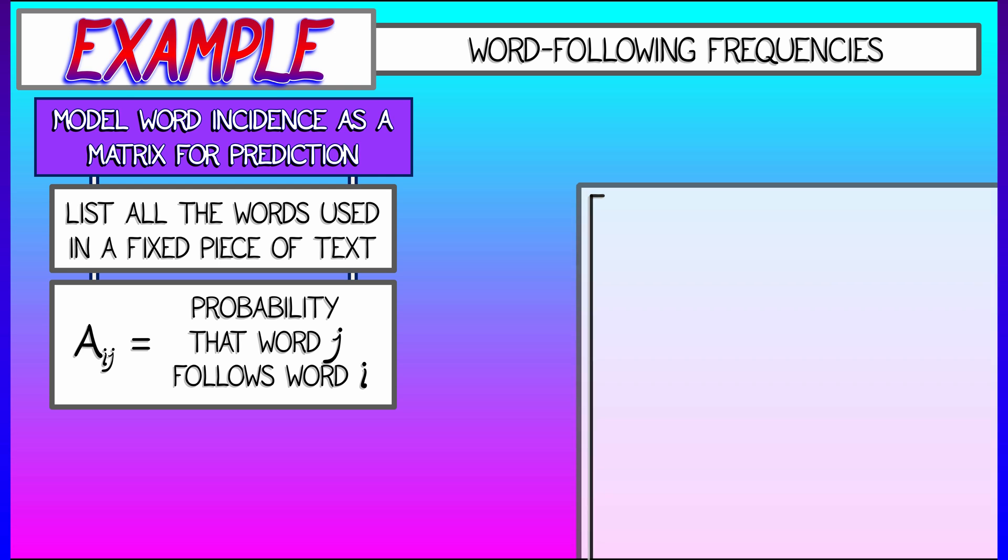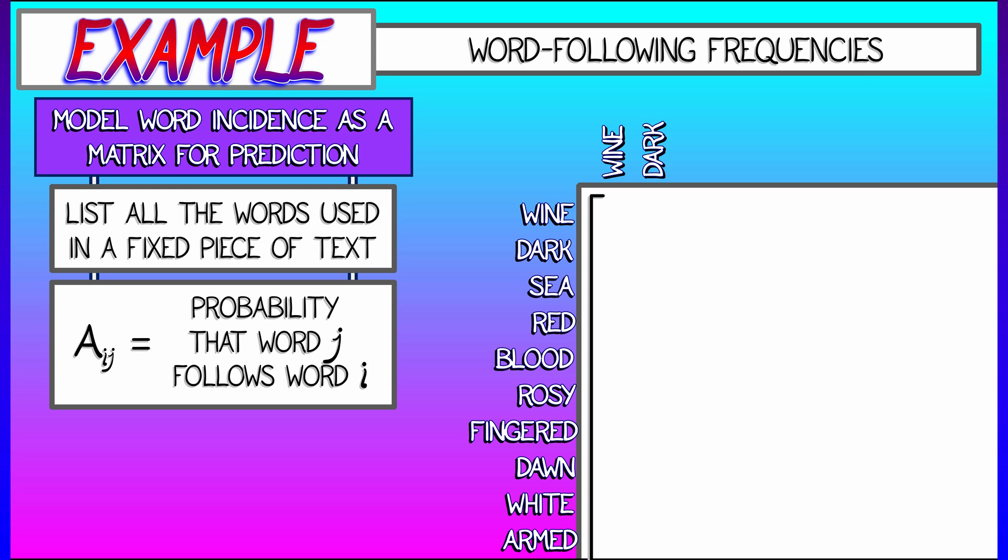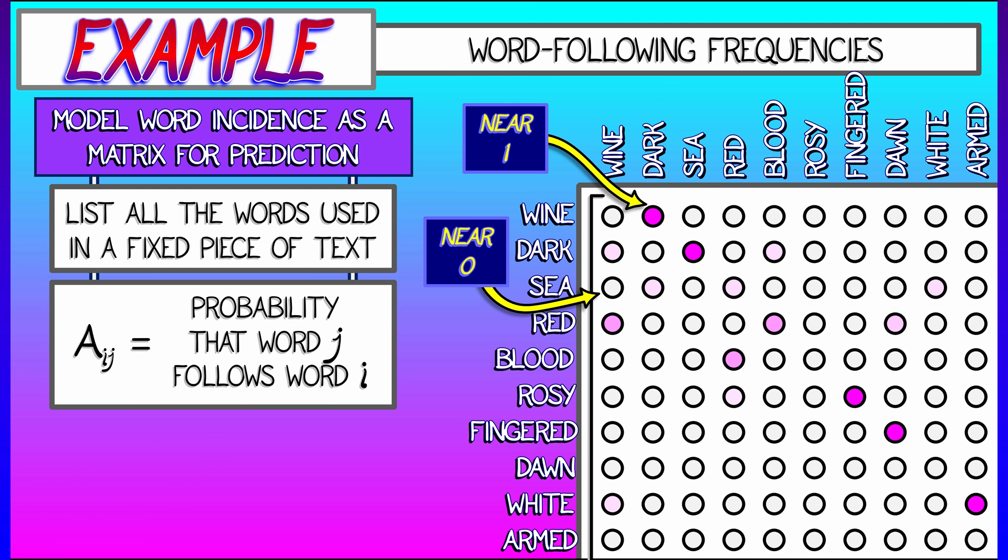So you've got some large text with lots of different words. You list them out, and if you've got the phrase wine-dark-sea that always shows up, then in this matrix the entry corresponding to wine, dark would be close to 1.